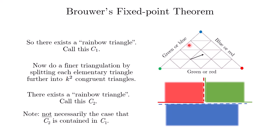I want to point out that it is not necessarily the case that C₂ is contained in C₁, because maybe in the first case we picked this rainbow triangle, but after a finer triangulation, we pick a rainbow triangle that is contained in a different part of the main triangle.